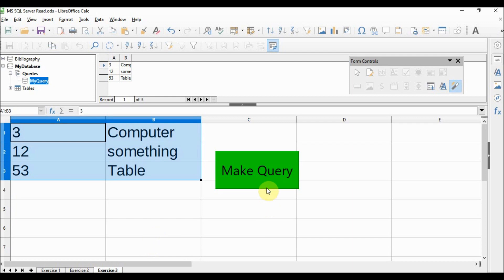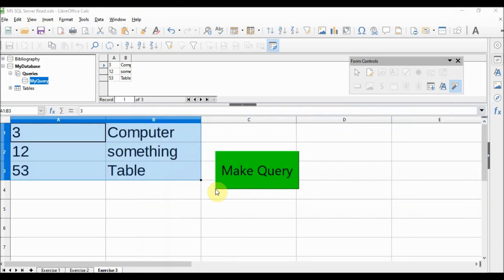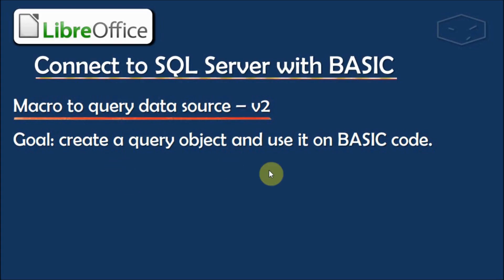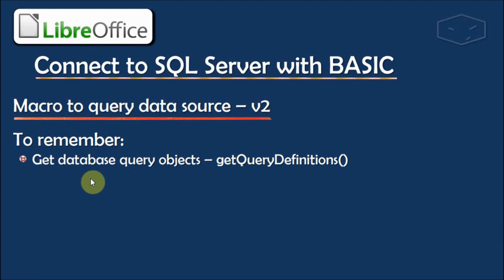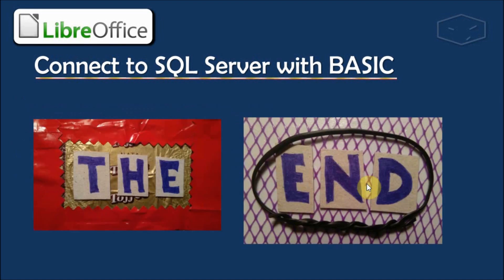Let me show you: I'll insert more values and execute them. If we go here and make the query, the results appear — only rows where A > 2. This is done. To remember: to get the database query object, call getQueryDefinitions(). To get the specific query, call getByName() and pass the name we gave when we created it in Base. This is the end. Thank you for watching.